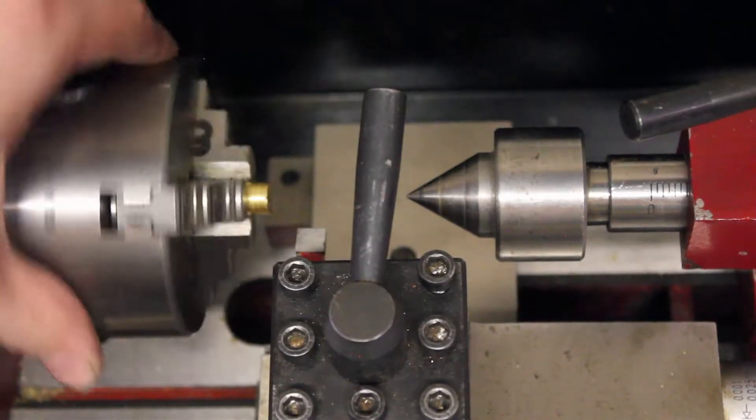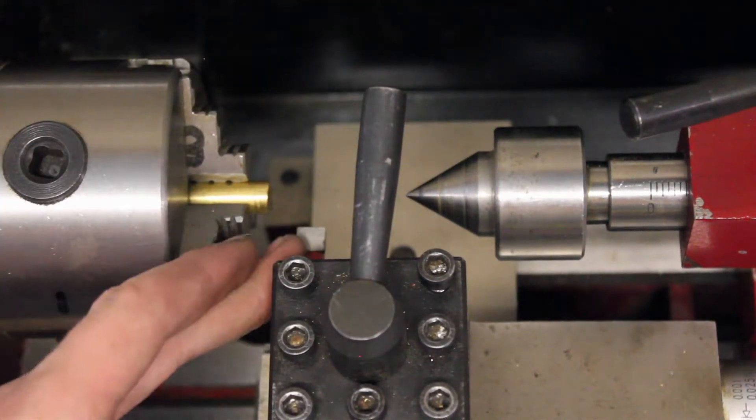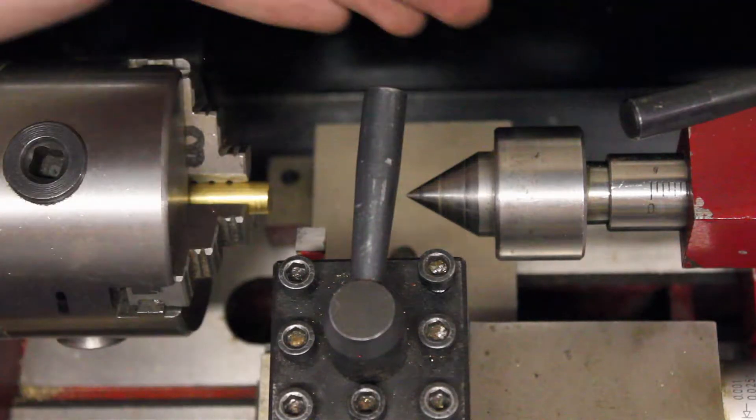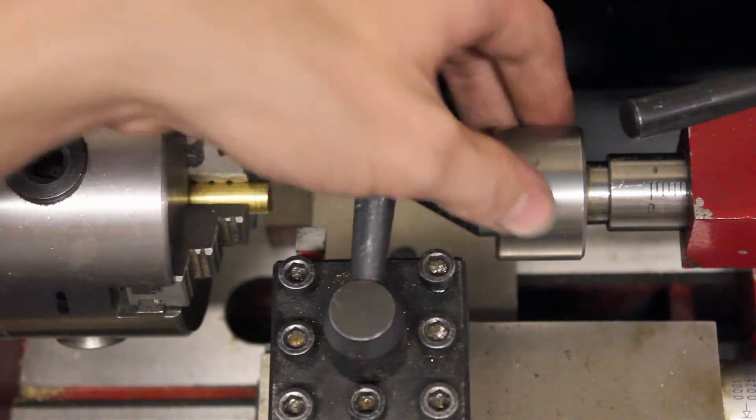Now that we have our chuck set up with our stock inside, we're ready to adjust the tool position for facing. We won't need to change anything about the tailstock because it's not used for facing operations.